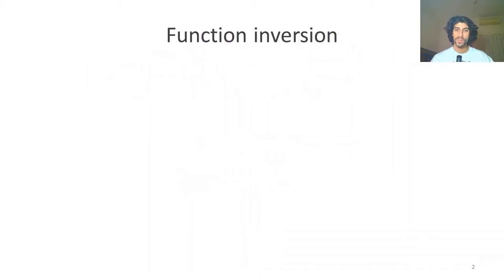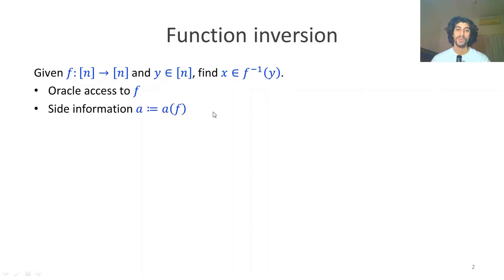First, let's describe the problem. Function inversion is basically, given a function and an image of the function y, find some x which is mapped by f to y - find the pre-image for y over f. To do so, we have oracle access to f and also have access to side information a.